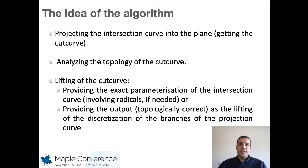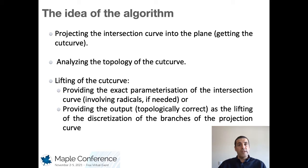First we start by determining the projection of the intersection curve into the plane, getting the so-called cut curve. Then we analyze its topology, determine the critical and singular points, and finally we make the lifting of the cut curve in two different ways: through the exact parameterization of the intersection curve, or when it's not possible, through the discretization of the branches from the cut curve topologically correct.